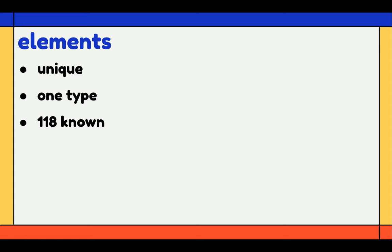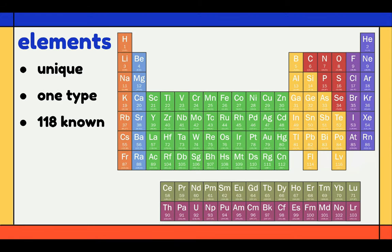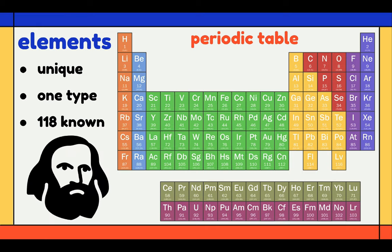Some elements exist at room temperature as gas, some are liquid, and some are solid. All elements are listed and organized in a chart called the periodic table. This was invented by the Russian scientist Dmitry Mendeleev in 1869.